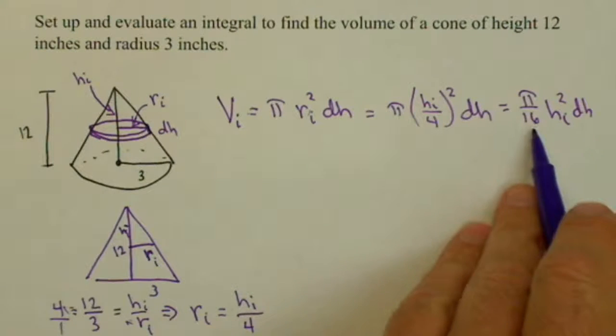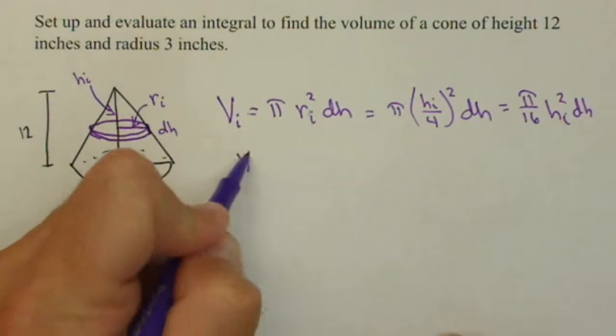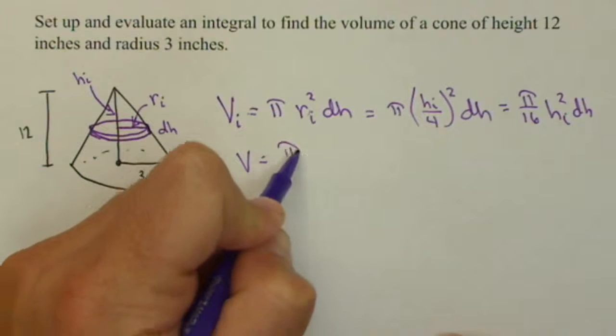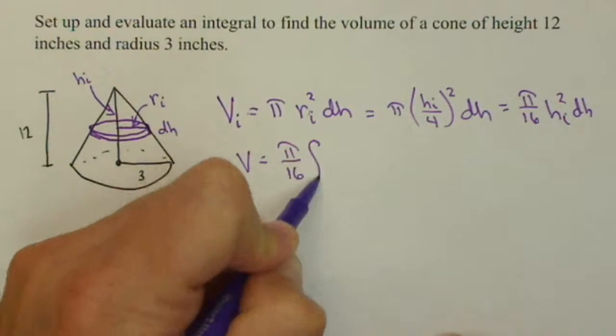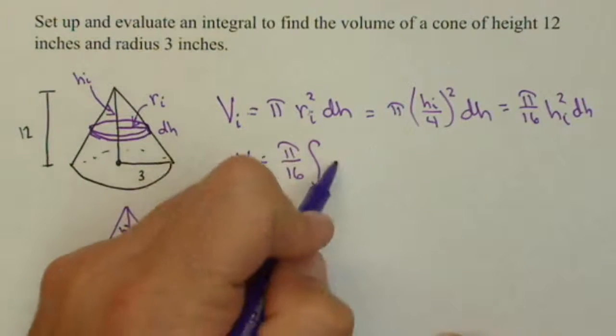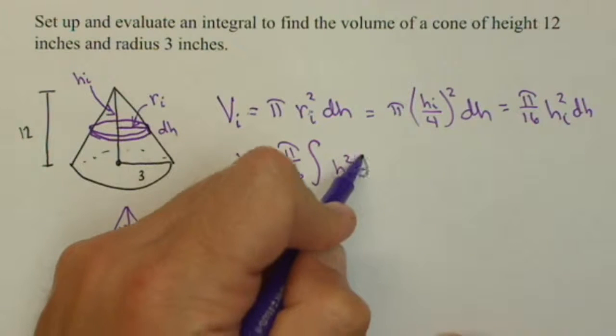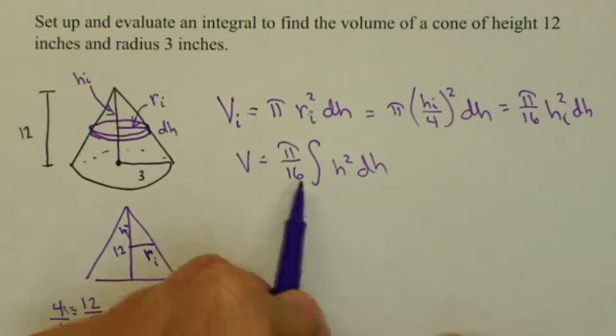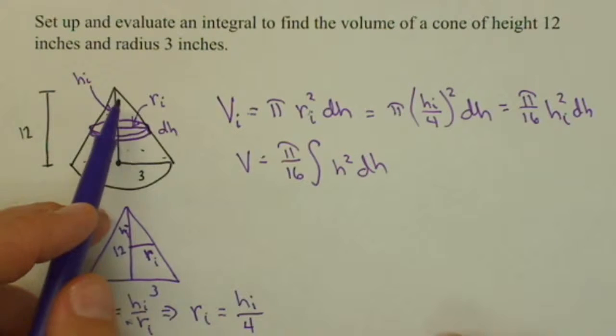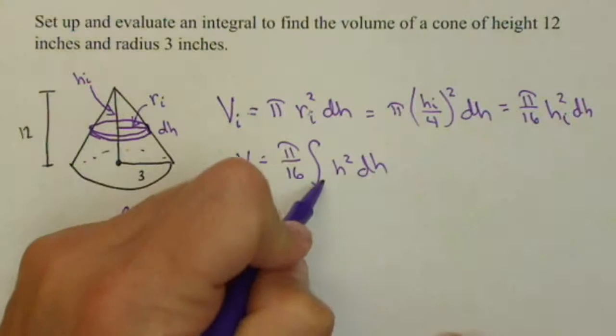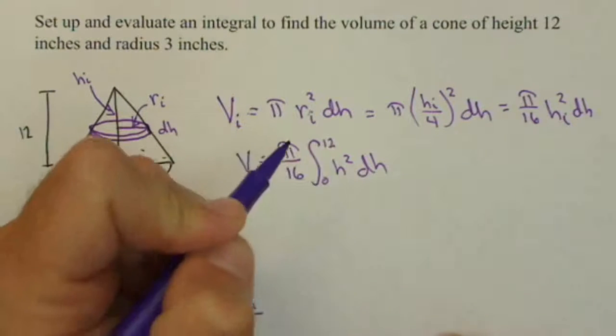I like writing it like this because pi over 16 is a constant. So, when I go to put together my definite integral, I'll have pi over 16 times the integral of H squared dH. Now, last thing we need are limits. Our lower limit, the smallest H can possibly be is 0, largest it can be is 12, so we're going to have 0 to 12.